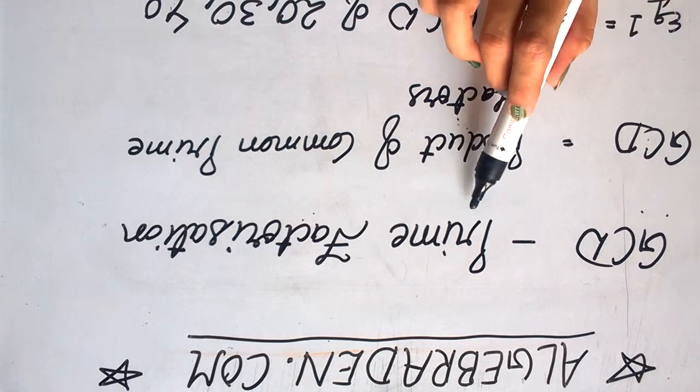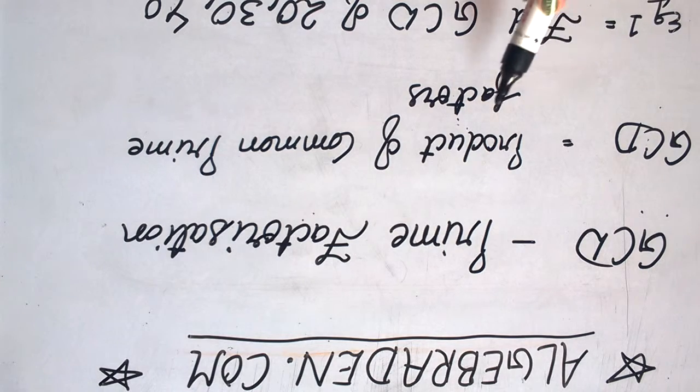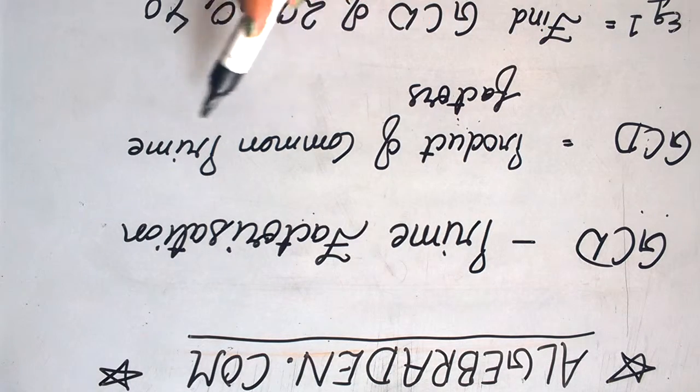Calculate GCD by prime factorization method. GCD is equal to product of common prime factors.